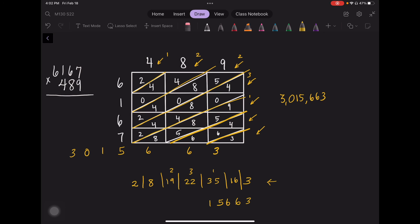Carry the 2. That makes that 10. Carry the 1. Which is 3. So I have 3,015,663.